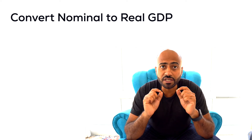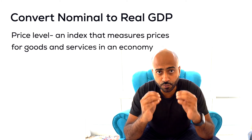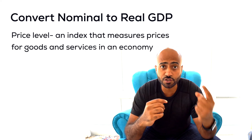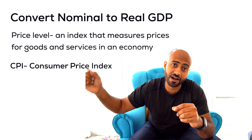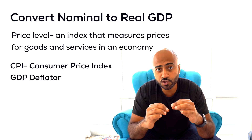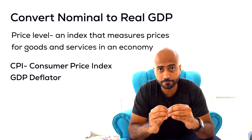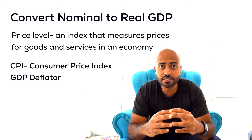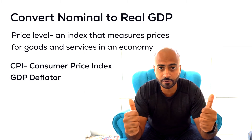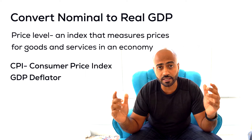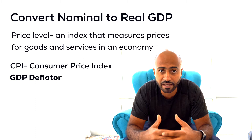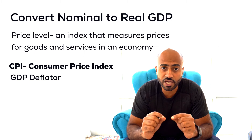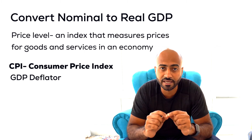To make that transition, we need to introduce the price level. There are really two different price level measures we're going to talk about this semester. The first is the consumer price index, which we'll cover in a couple of chapters. For this chapter, we're going to talk about the GDP deflator. The big difference between the two is what prices we're trying to compare. If we're interested in overall prices in the economy, the GDP deflator is a better measure. However, if we're interested in the change in prices that consumers face, then the consumer price index is better.